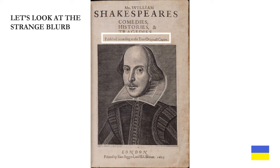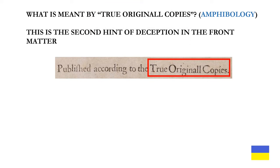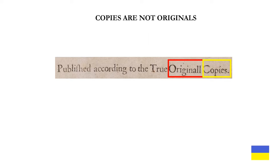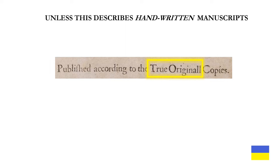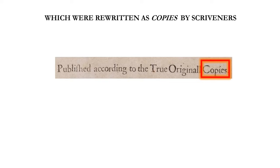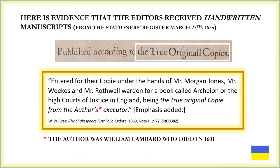Let's look at the strange blurb 'published according to the true original copies.' What is meant by true original copies? This is an example of the rhetorical figure of amphibology, which means ambiguity. This is the second hint of deception in the front matter. Copies are not originals, which means they are not really the true items either — unless 'true original' describes handwritten manuscripts rewritten as copies by scriveners. Here is evidence from the records of the Stationer's Office that the editors received handwritten manuscripts, from the Stationer's Register of March 27, 1635.